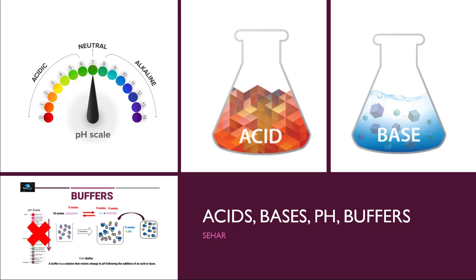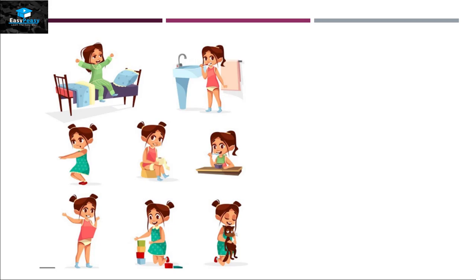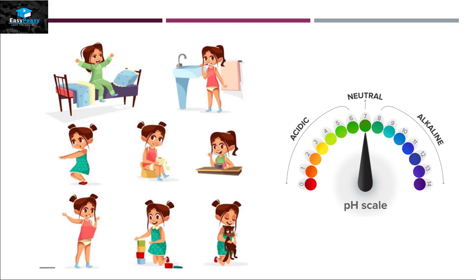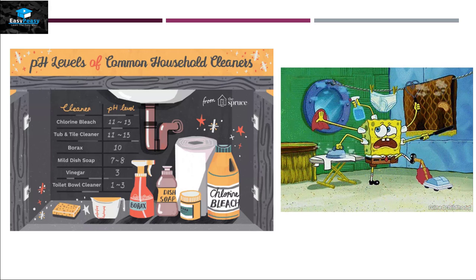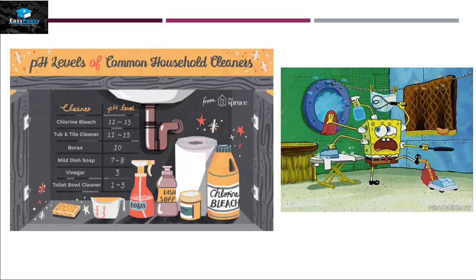Hello, this is Sahir from Easy Peasy. The topic we are going to discuss today is acids, bases, pH, and buffers. In our daily routine life we use a lot of different substances that have different pH — some substances are acidic in nature, some are neutral, and some have alkaline nature. This difference is also visible in the food that we eat and in the cleaning substances that we use.